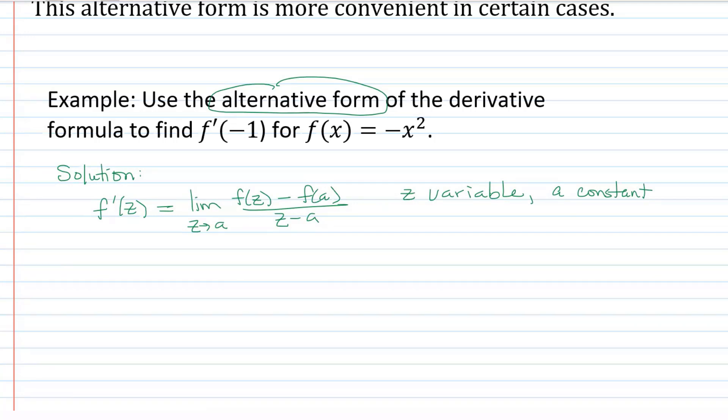The a that we're looking, oops, I just wrote that wrong actually, my bad. At the beginning, please erase, it should have been f prime of a, not f prime of z. So the derivative at a is equal to the limit as z approaches the constant value a of f of z minus f of a over z minus a. Let a be in this case negative one. f prime of negative one is the limit as z approaches negative one of f of z minus f of negative one divided by z minus negative one.